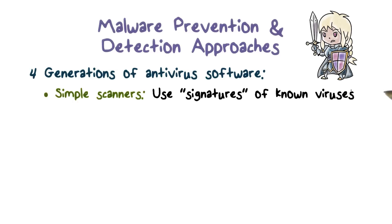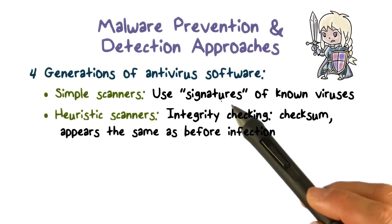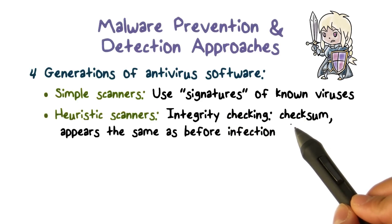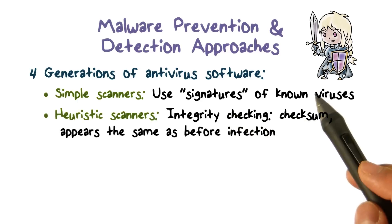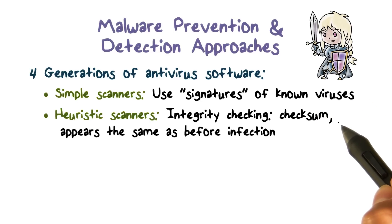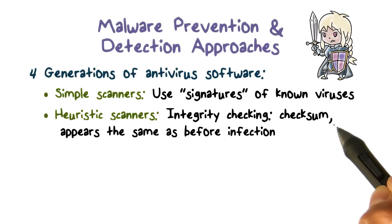For polymorphic viruses, each instance is encrypted with a randomly generated key such that there's no unique signature across all instances of the same virus. The second generation is heuristic scanners, which are based on possible effects of infection. For example, if a program file has been infected with a virus, the checksum of the original file would have changed because new content has been added.